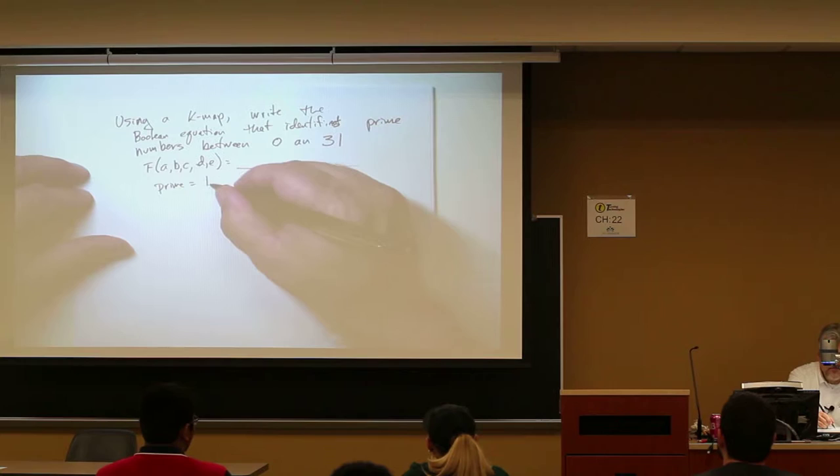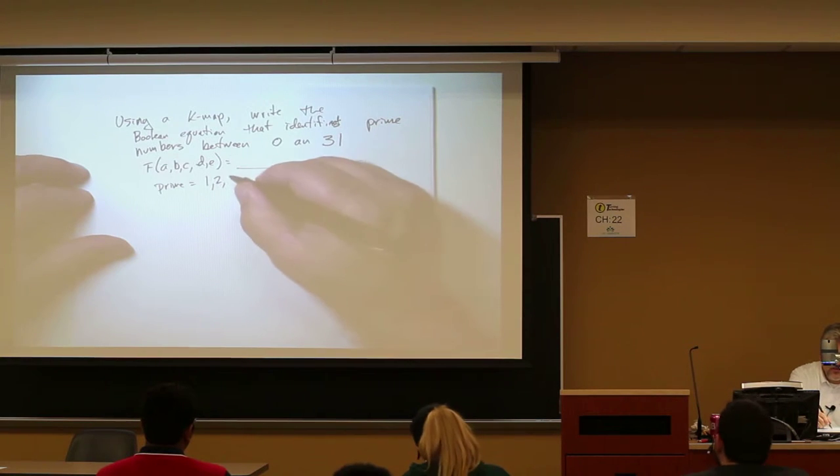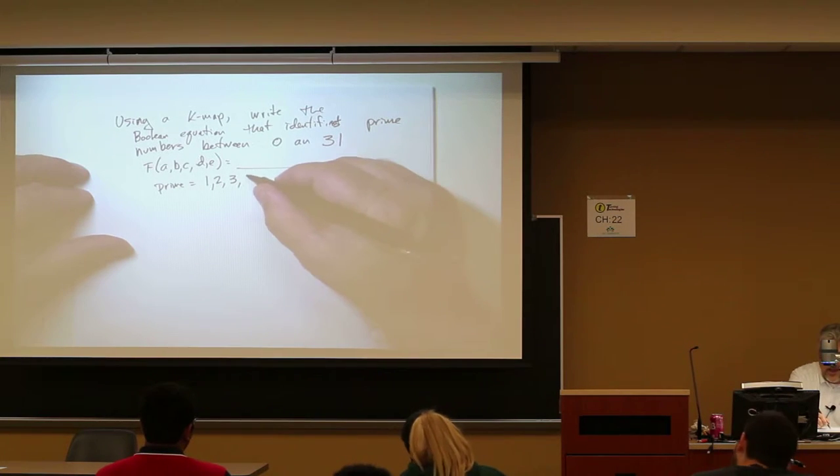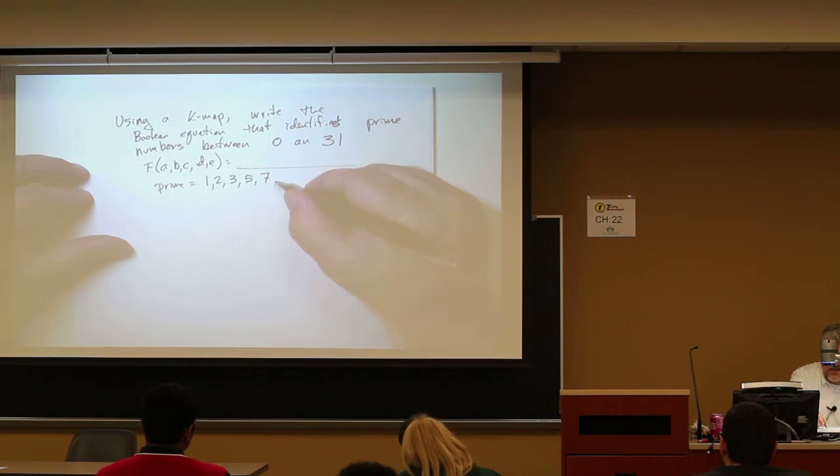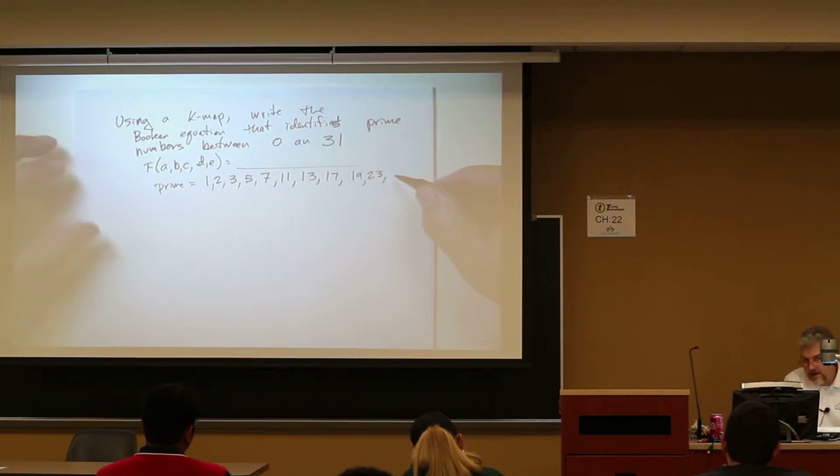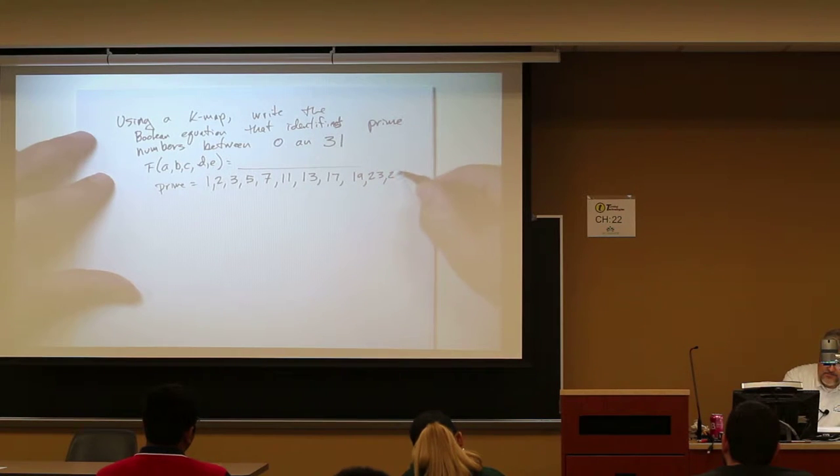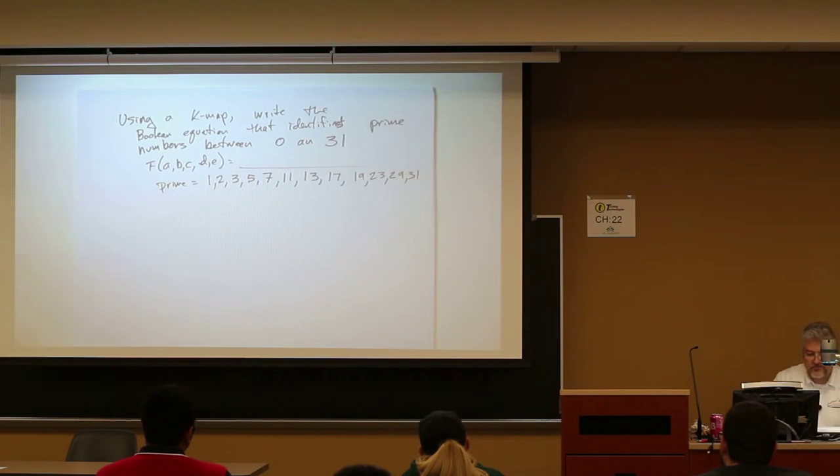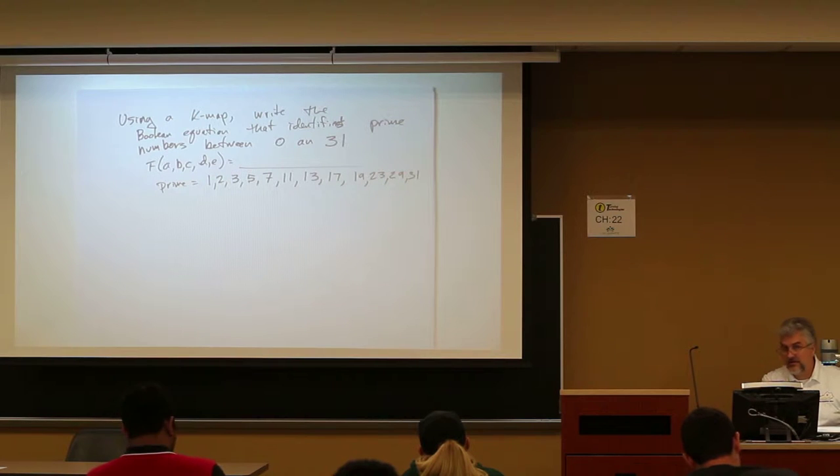So what's our prime numbers? 1, 2, 3, 5, 7, 11, 13, 17, 19, 23. 25 is 5 times 5. 29? 31. There's a lot of them, aren't there? Right?